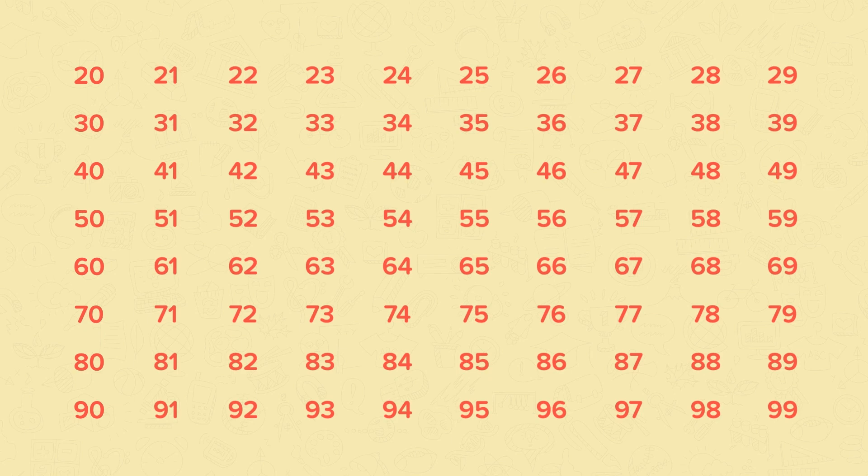So now you've mastered 1 to 19, we're going to move on to numbers between 20 and 100. That's a lot of numbers, but don't worry. If you can already spell 1 to 9, all you need to do is practice spelling the multiples of 10.